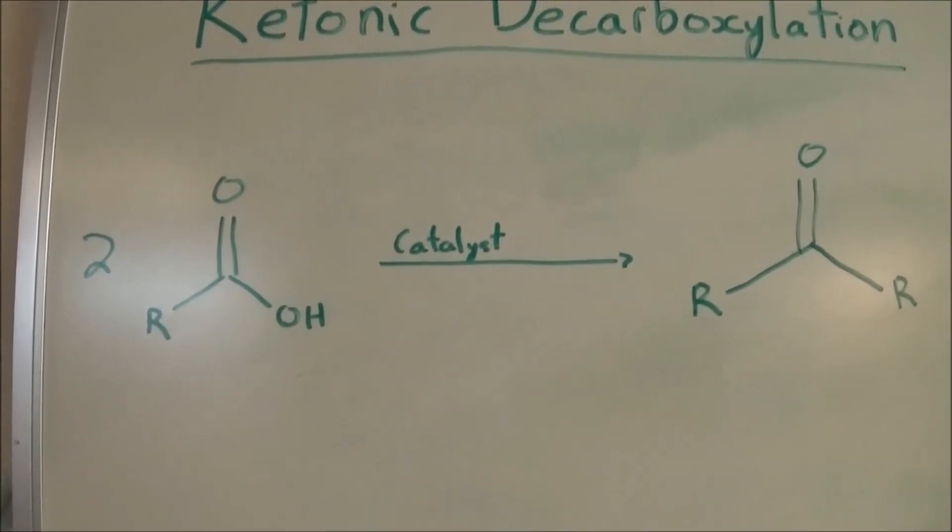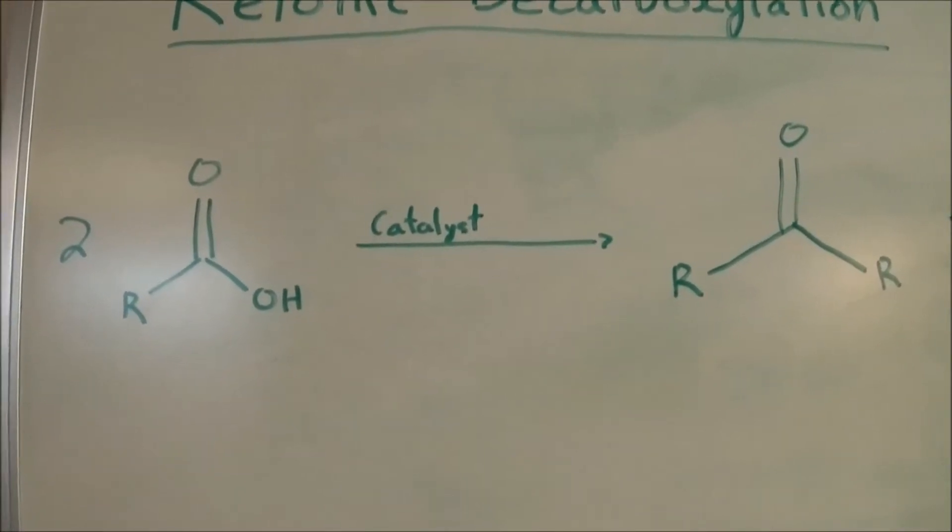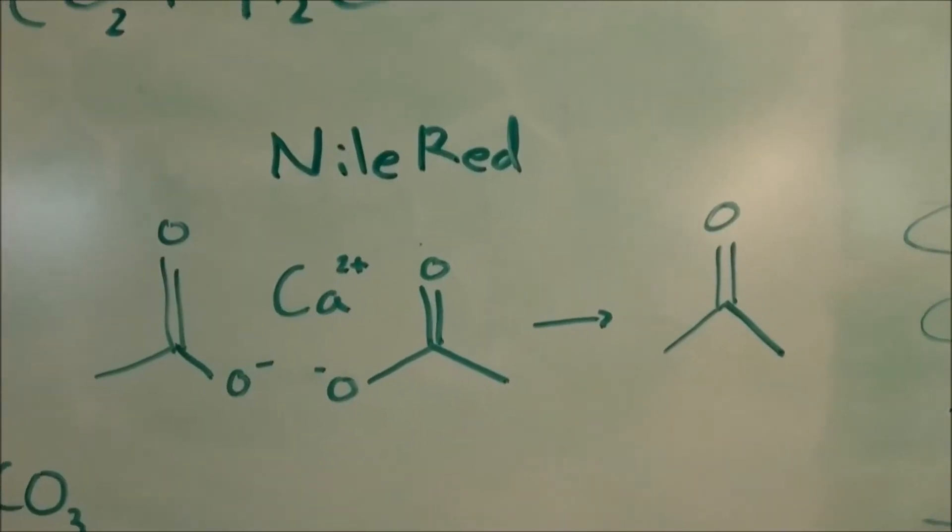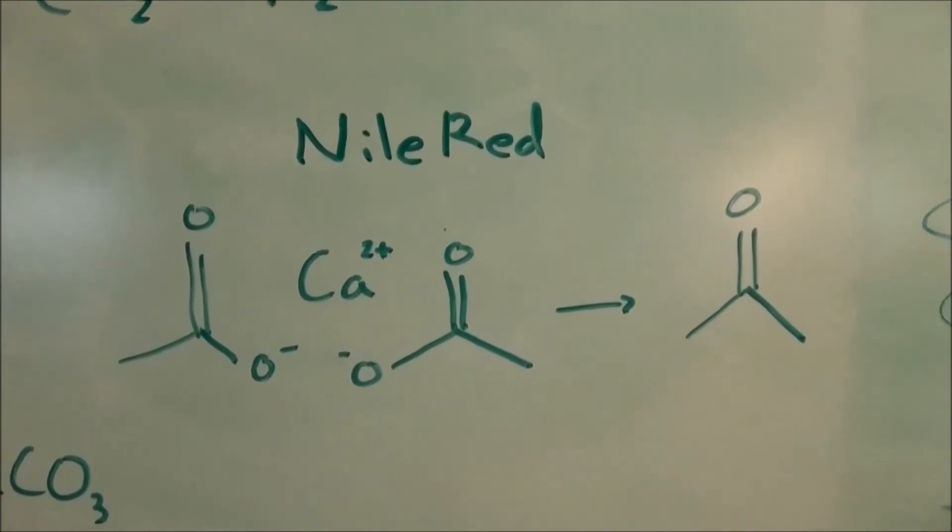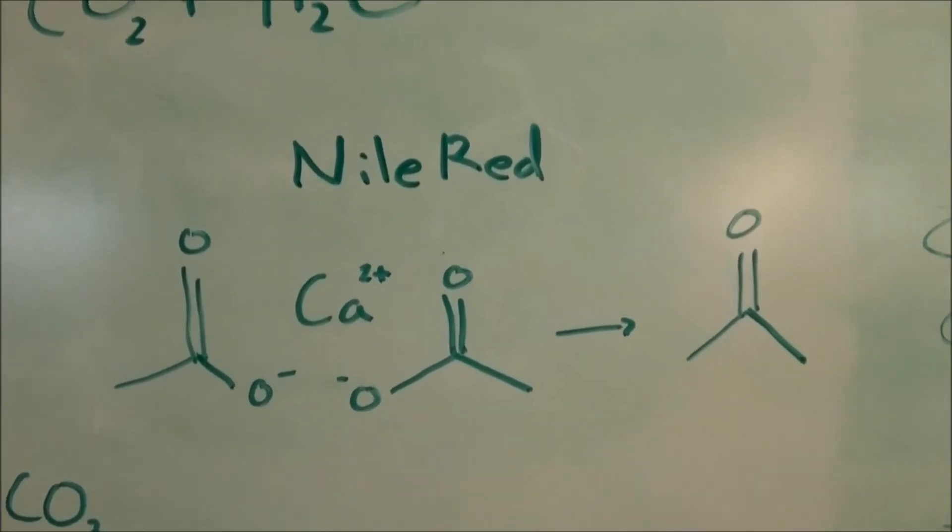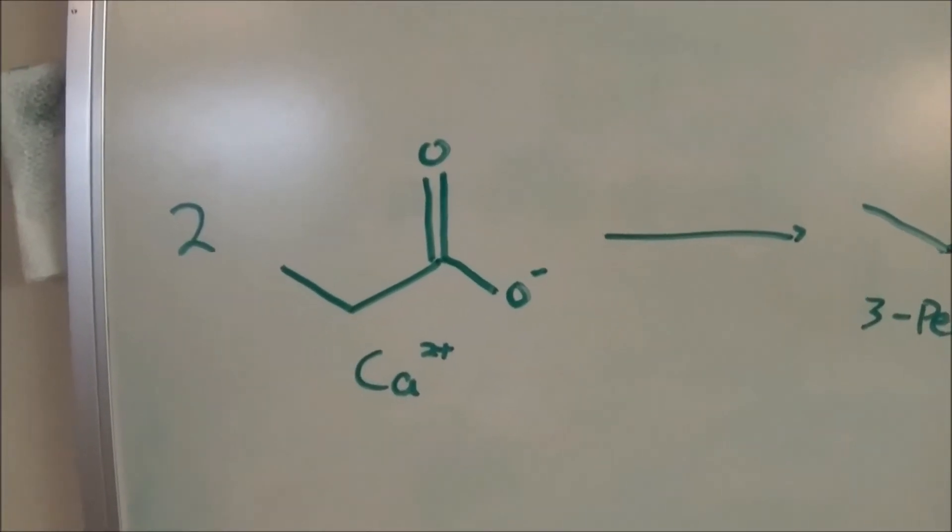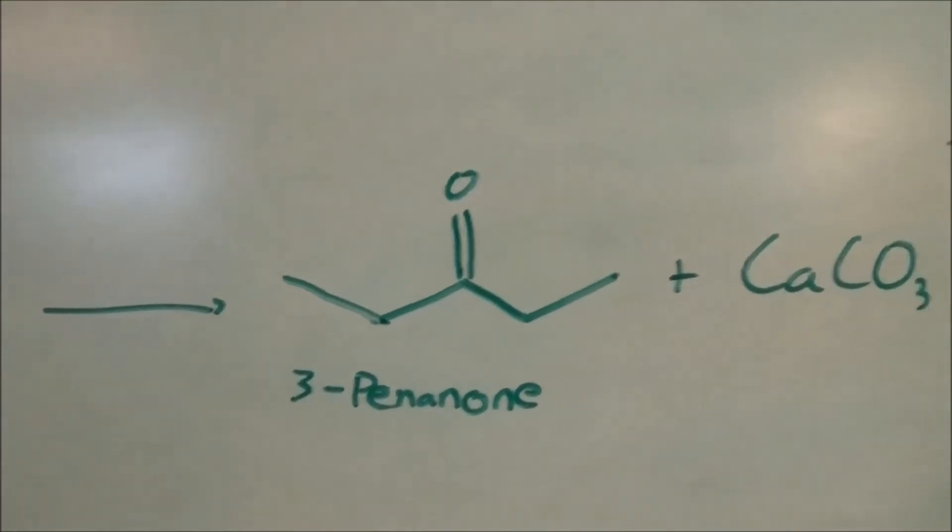It just so happens that this reaction will also take place with the salts of carboxylic acids. I believe this happens with all salts but it works best with calcium and barium ones. This reaction used to be used to produce acetone in a reaction that is demonstrated by Nile Red. Today I will heat calcium propanoate to high temperatures to give three-pentanone as well as a little bit of calcium carbonate.